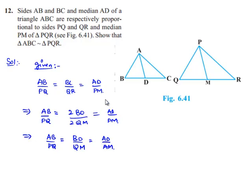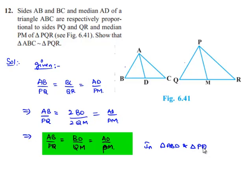Now here if we observe, AB by PQ is equal to BD by QM is equal to AD by PM. So here in two triangles, that is in triangle ABD and triangle PQM, the corresponding sides are in proportion.